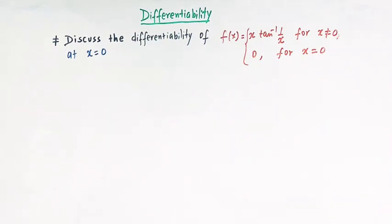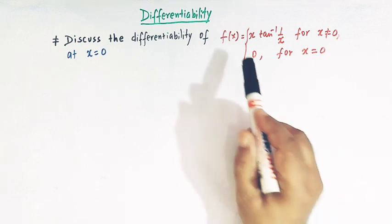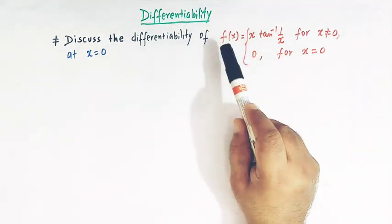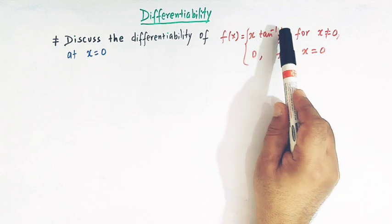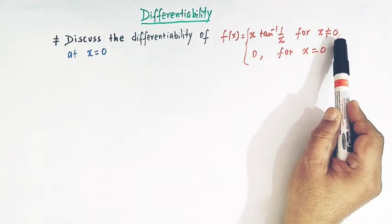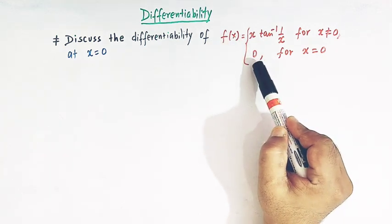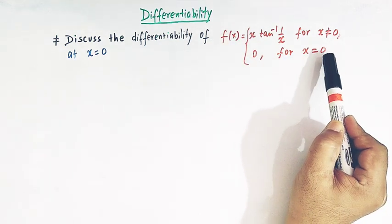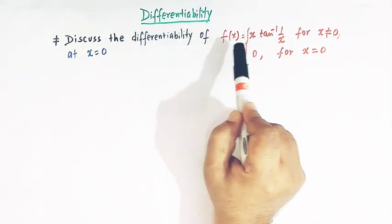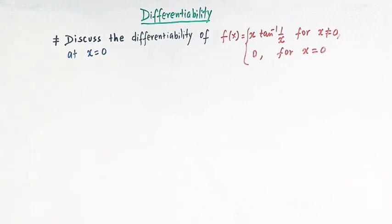Hello viewers. In today's class we are going to discuss yet another important and conceptual problem from differentiability of functions. In this lecture we'll discuss the differentiability of the function f(x), which is defined as x times tan inverse of 1 over x for x not equal to 0, and f(x) is equal to 0 for x equal to 0. We have to discuss the differentiability of this function at x equal to 0 and see whether this function has a derivative there or not.